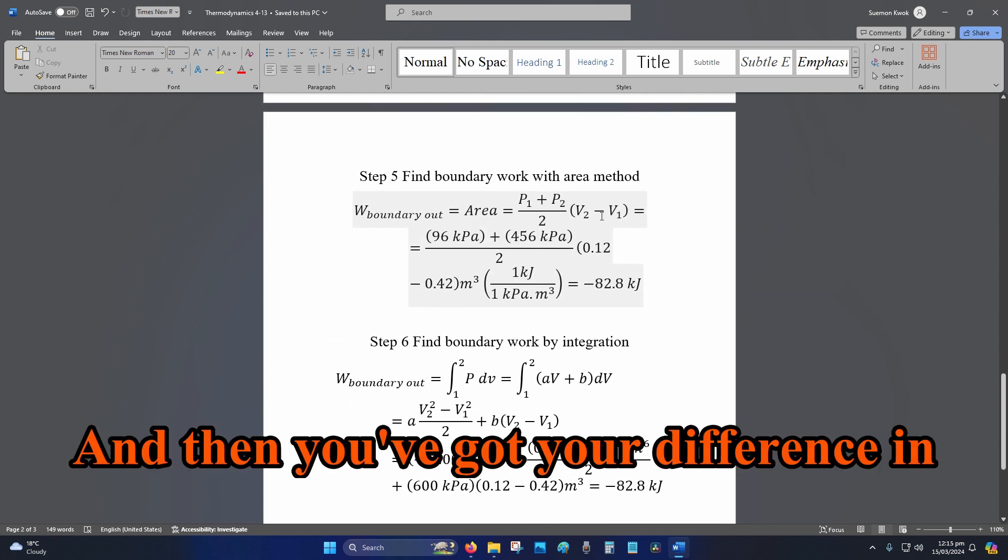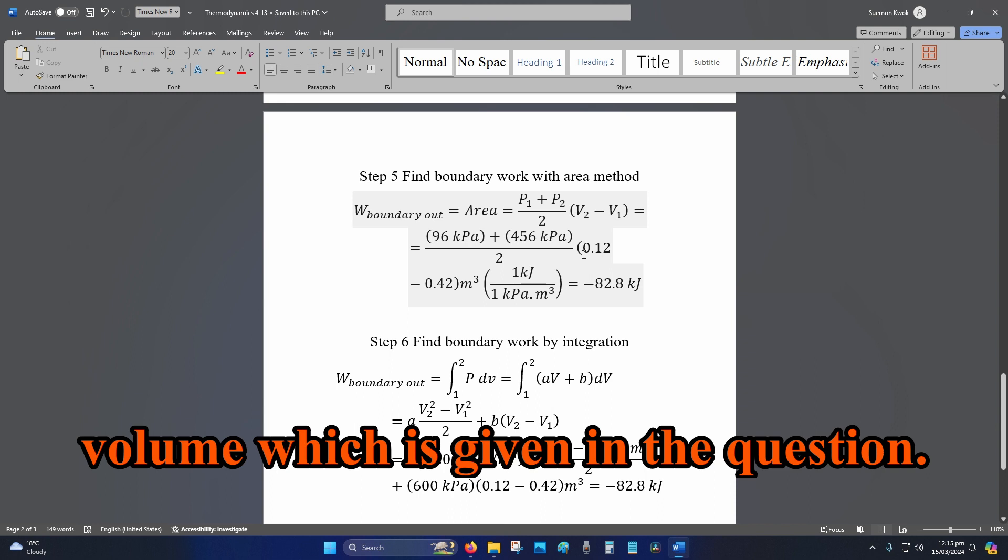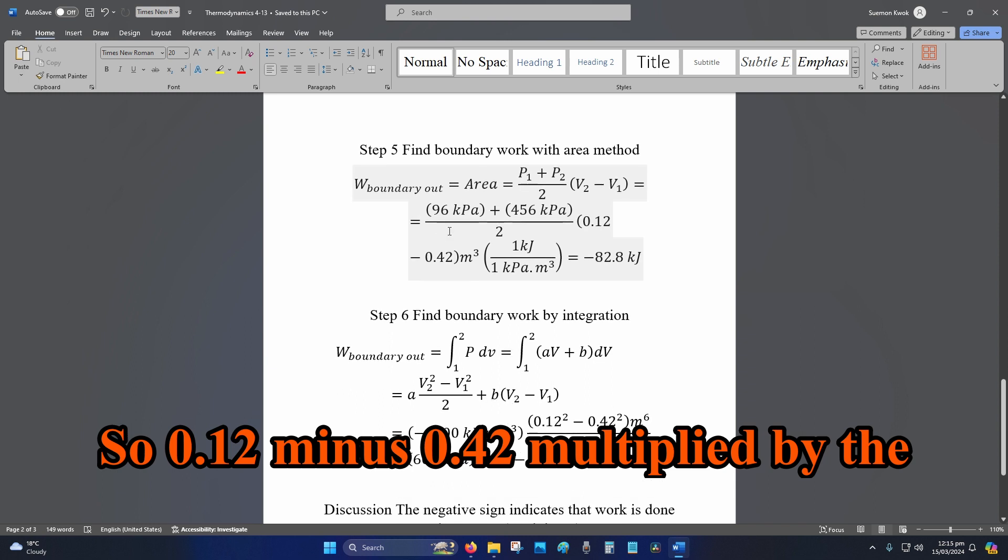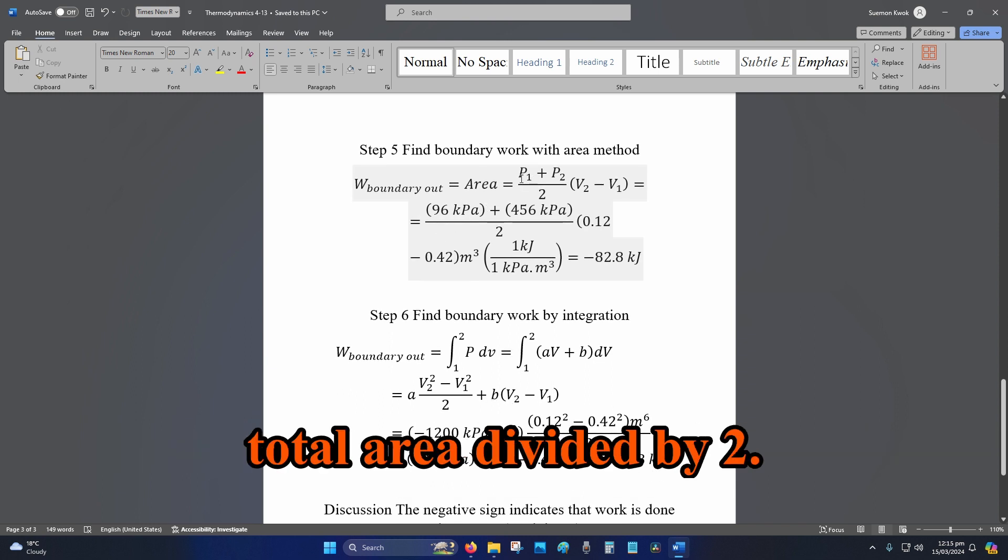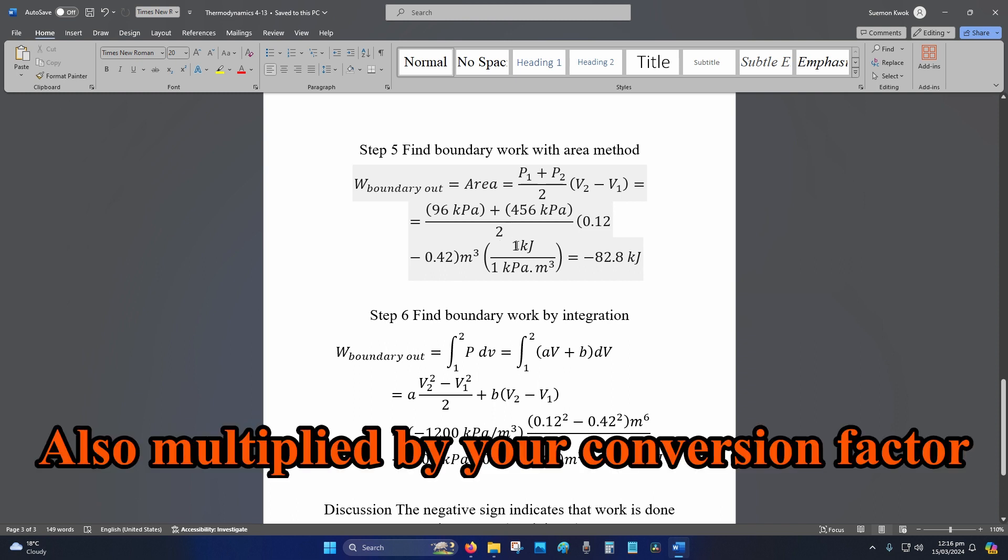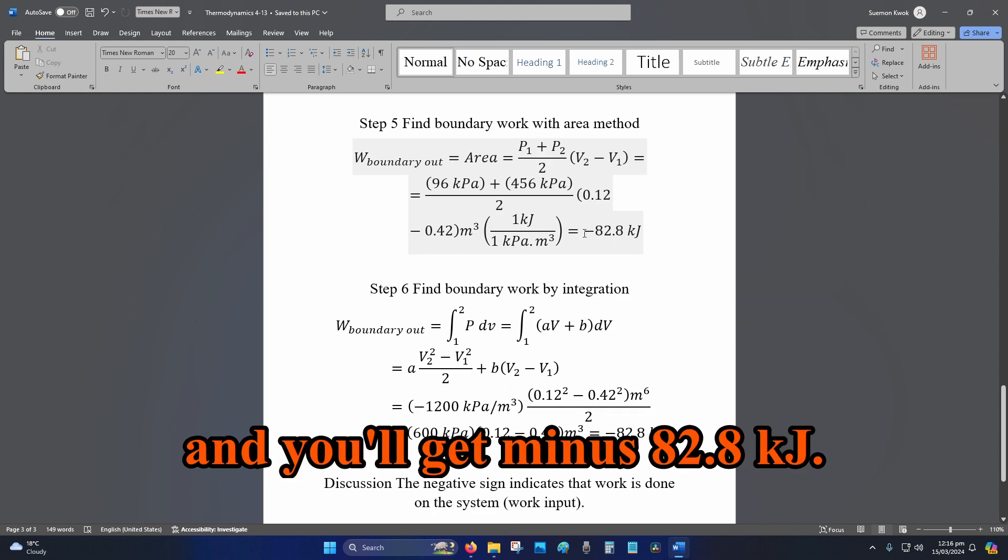And then you've got your difference in volume, which is given in the question: 0.12 minus 0.42 multiplied by the total area divided by 2, also multiplied by your conversion factor. And you'll get minus 82.8 kJ.